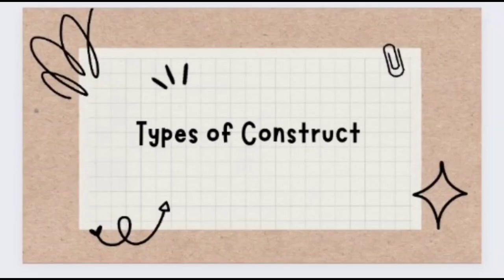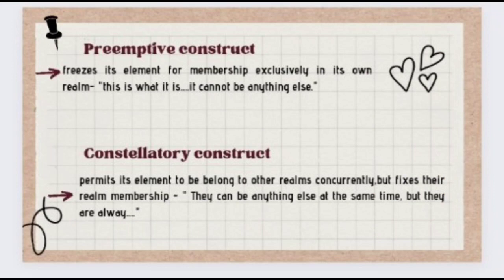The types of constructs: The preemptive construct freezes its elements for membership exclusively in its own realm — this is what it is, and it cannot be anything else. A construct which preempts its elements for membership in its own realm exclusively is called a preemptive construct. This is the 'nothing but' type of construction. For example, if this is a torpedo, it is nothing but a torpedo.